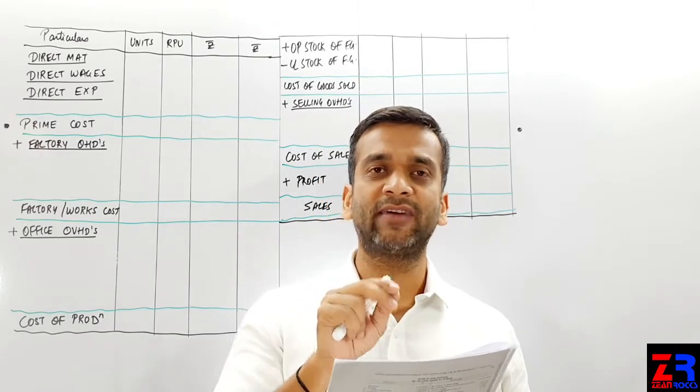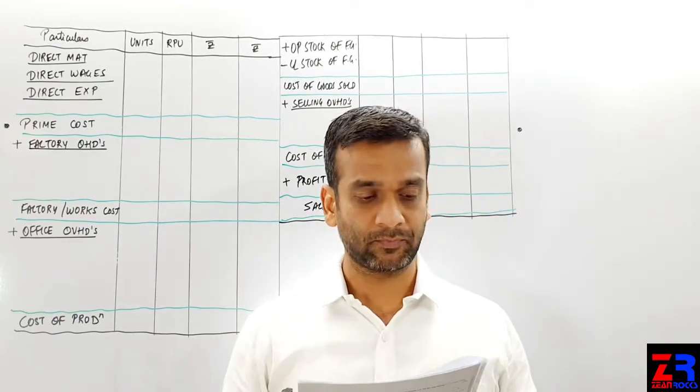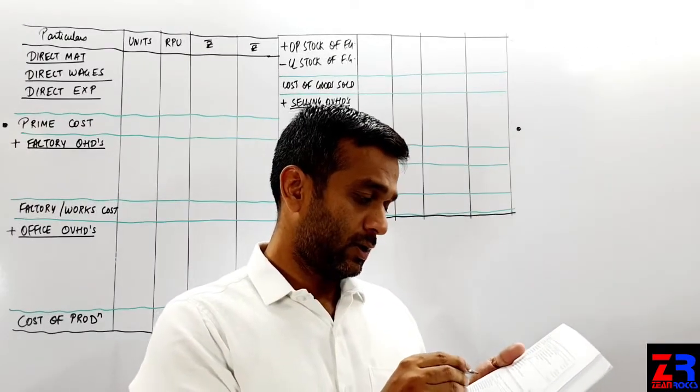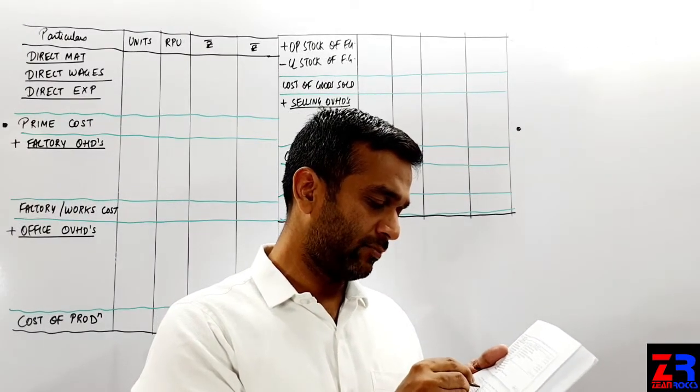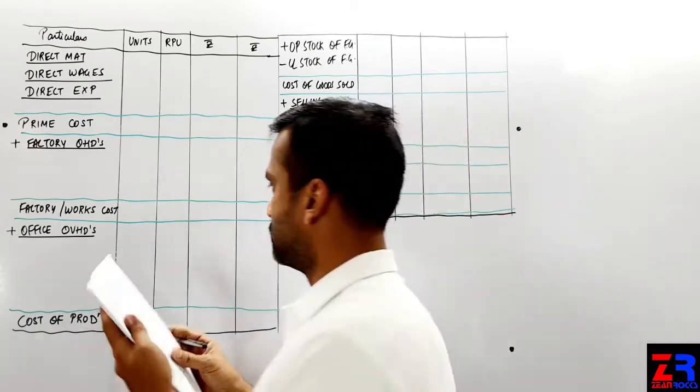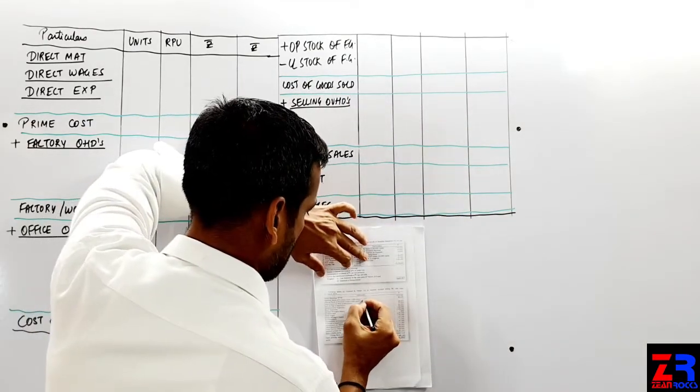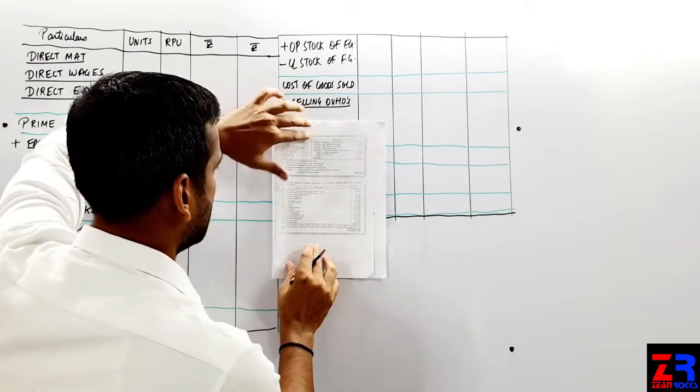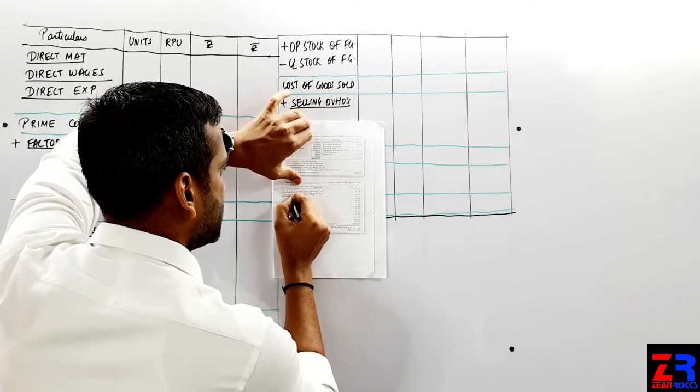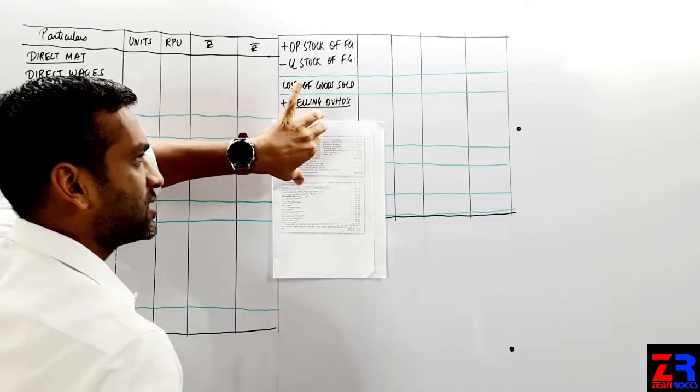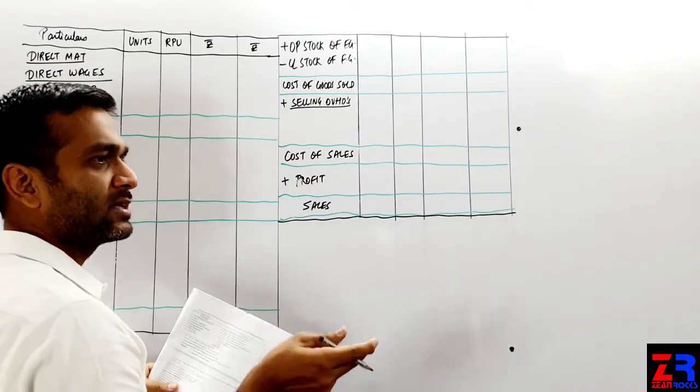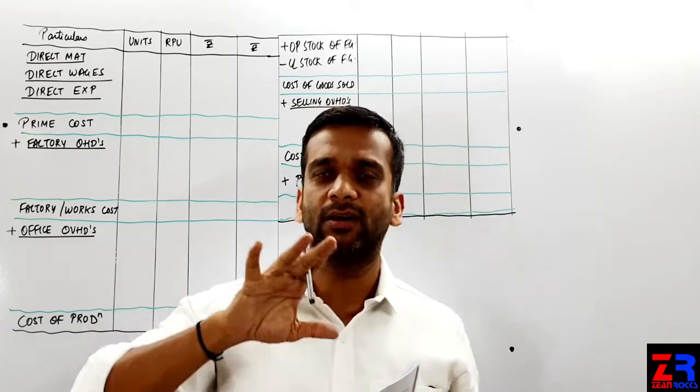Now, my first job will be to identify which thing you are going to pay. So take a pencil and start to identify. Direct material is direct material. Opening stock of finished goods is plus COP. Closing stock of finished goods is minus COP. Depreciation on plant and machinery is factory overhead. Loss on sale of machinery is chokdi because it's an abnormal item. Our money is not going to pay for the machine. So loss on sale of machinery is not going to come in cost sheet.